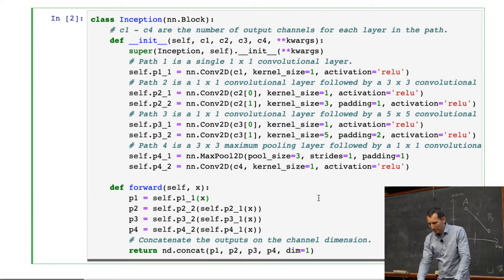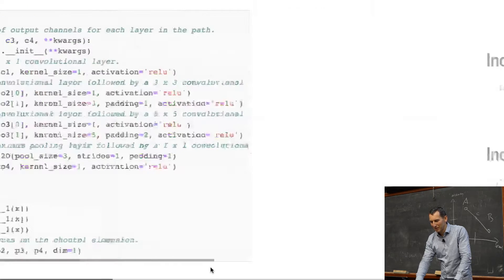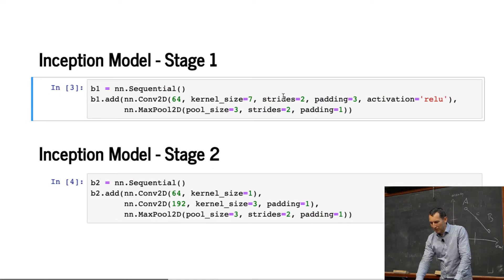So, nd concat of p1, 2, 3, 4 along dimension 1 just stacks everything up and that's now the output of that layer. Once you think about it this way, it's actually fairly straightforward. If I wanted to modify that architecture of the inception block, that would be very easy. So, remember this will return a block with these parameters, right? With basically c1, 2, 3, and 4. And some other parameters that I might have.